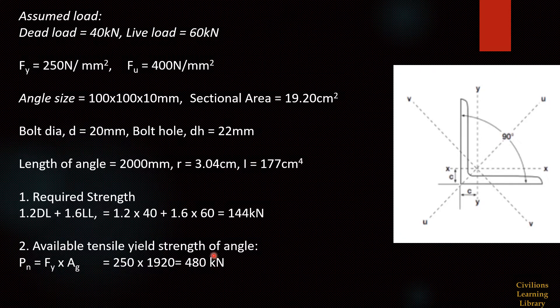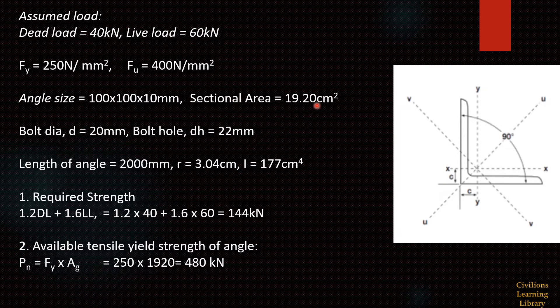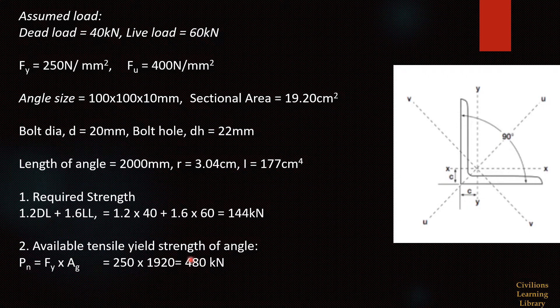So the angle should carry minimum of 144 kN. We will check the available tensile yield strength of this angle. For calculating tensile yield strength of angle the formula is Fy into Ag. Fy is the yield strength of the angle, Ag is the gross area of angle which is 19.2 cm². We are converting into mm square 1920. Hence the tensile yield strength of the angle is 480 kN.